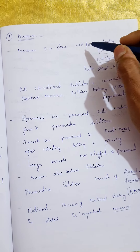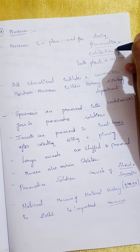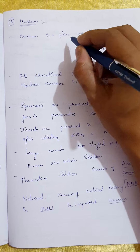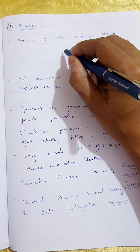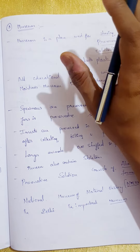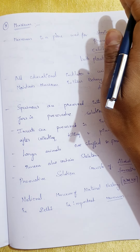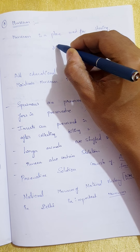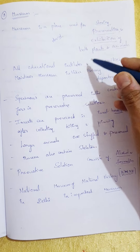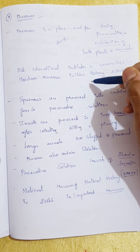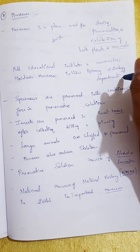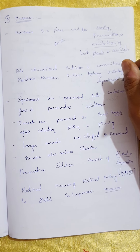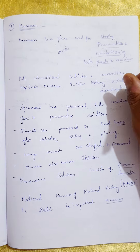A museum is a place used for storing, preserving, and exhibiting both plants and animals. Almost all specimens in museums are dead and dried in nature. All educational institutions and universities maintain museums in their botany and geology departments — there are rules and regulations to be followed, so that students develop interest in these subjects.